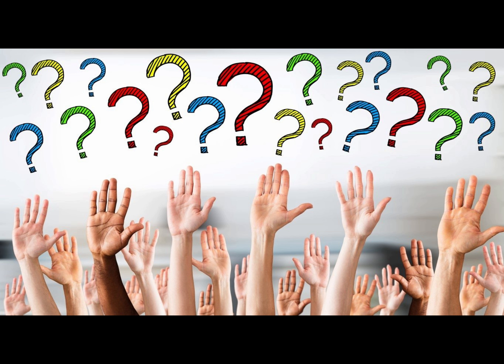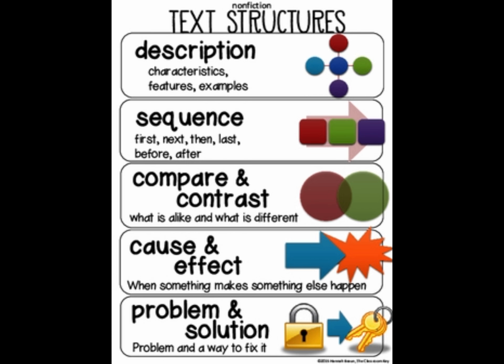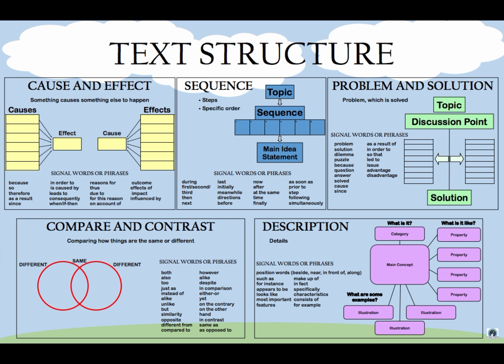This is also a great time to ask questions so students may review the experiment in which they just participated. To incorporate ELA into this lesson, students will then begin thinking about an appropriate text structure to use for their lab report — should they use a cause and effect structure, a sequential text structure, or a problem and solution text structure? Once students have decided on a text structure for their written report, they should be able to justify their reasoning.